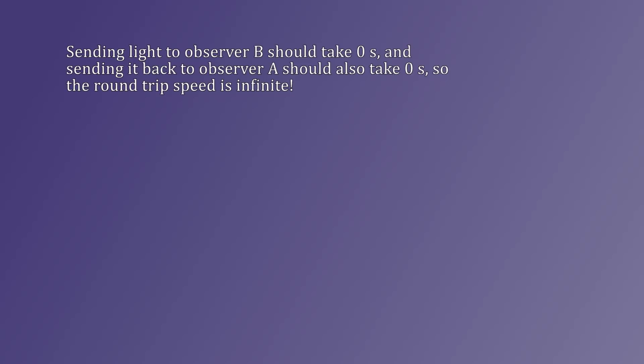The first problem people seem to have is that if you have two observers bouncing light between them, it should travel instantly in both directions, because in both directions it's heading toward an observer. Thus, the round-trip speed is infinite and not C, and that's something that should be possible to confirm experimentally. So that falsifies Lyle's convention, right? No, this is a misunderstanding of what Lyle actually proposes. Say that observers A and B bounce light between them — it doesn't matter if they're emitting pulses of their own, or if they're reflecting the same pulse with mirrors.